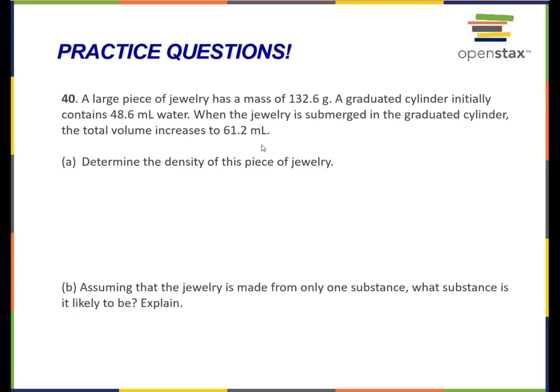A large piece of jewelry has a mass of 132.6 grams. A graduated cylinder initially contains 48.6 mL of water. When the jewelry is submerged in the graduated cylinder, the total volume increases to 61.2 milliliters. Determine the density of this piece of jewelry.